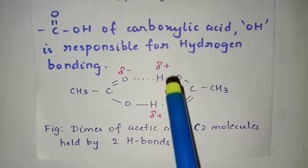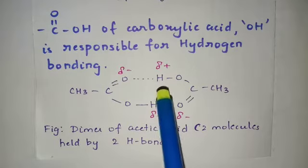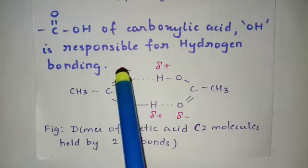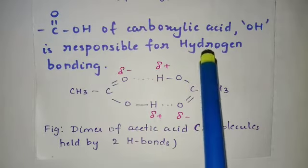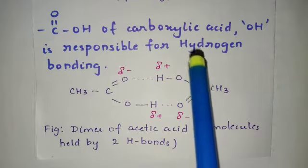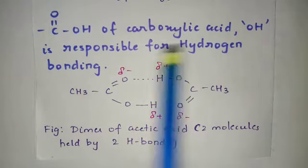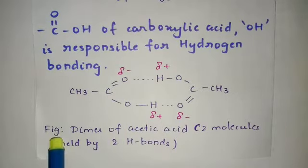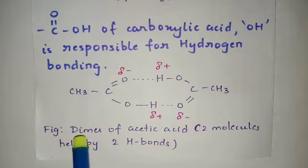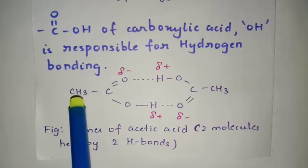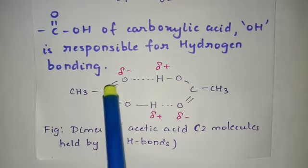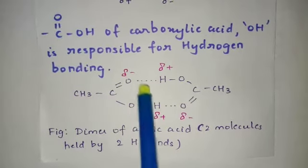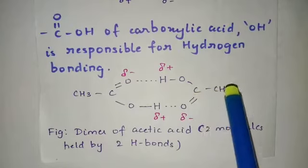What happens is a hydrogen atom bonded to a strongly electronegative atom or an atom which has a lone pair of electrons — that is nothing but hydrogen bonding. You can see an example here: I have drawn a structure which is nothing but the dimer of acetic acid. You can see CH₃C double bond O, OH — this is one acetic acid molecule, and this is the other one.